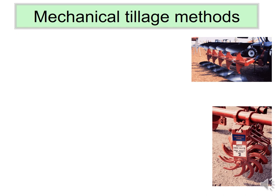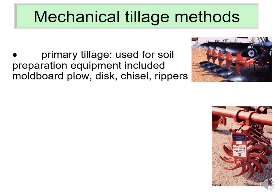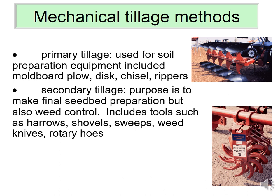Mechanical tillage methods, also called physical methods, are very important operations for organic agriculture. Primary tillage is reserved for soil preparation and includes implements that do major soil movement — rippers to break up hardpan, chisels, and discs to break up dirt clods. The moldboard plow folds an 8-inch slab of soil over on itself so whatever was on the surface is now 8 inches down. Small-seeded weed species like pigweeds and most annual weed species cannot survive being buried 8 inches deep.